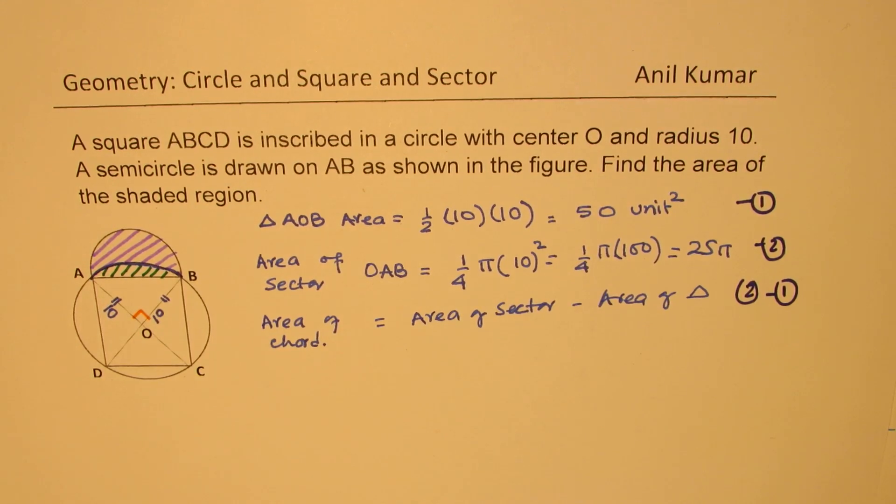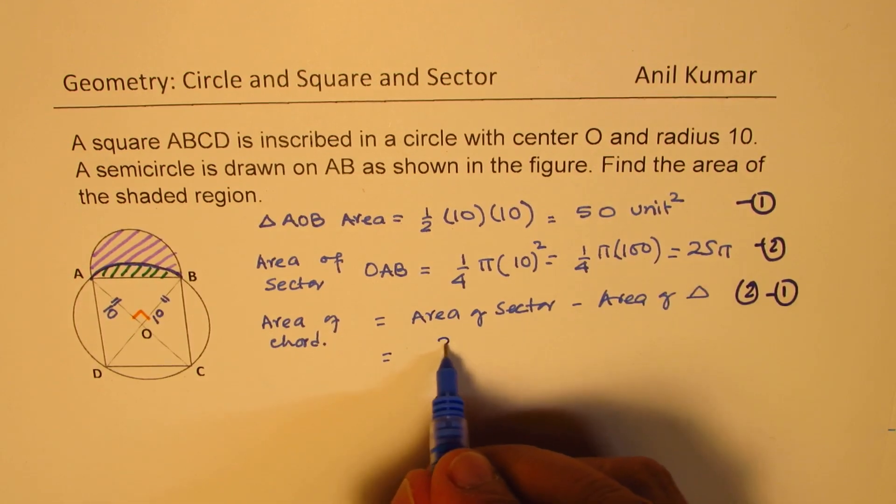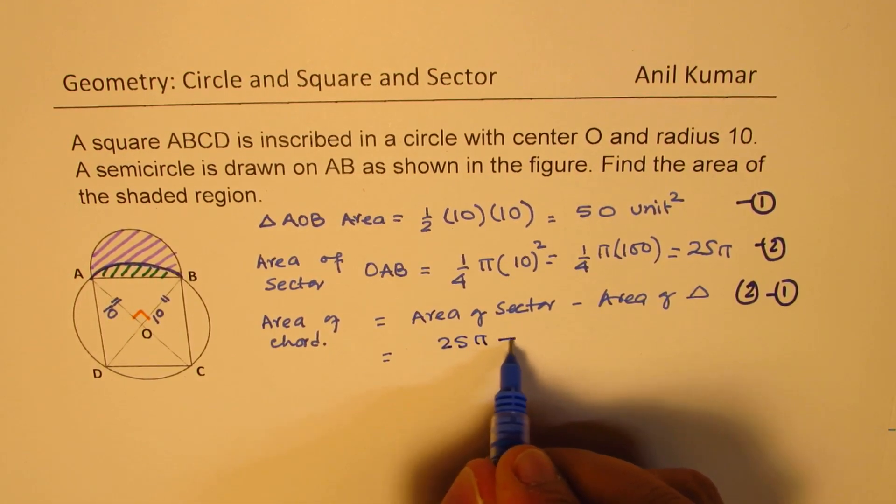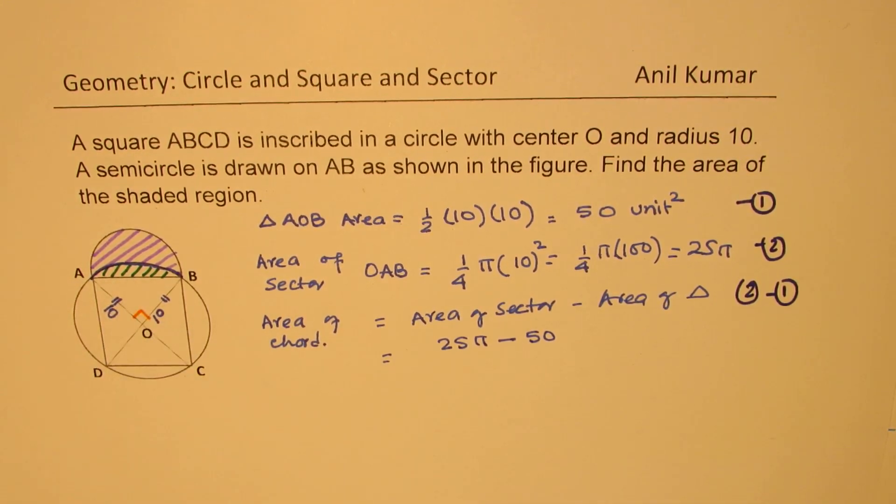Substituting, we get area of sector is 25π, take away 50. So that becomes the area of the chord.